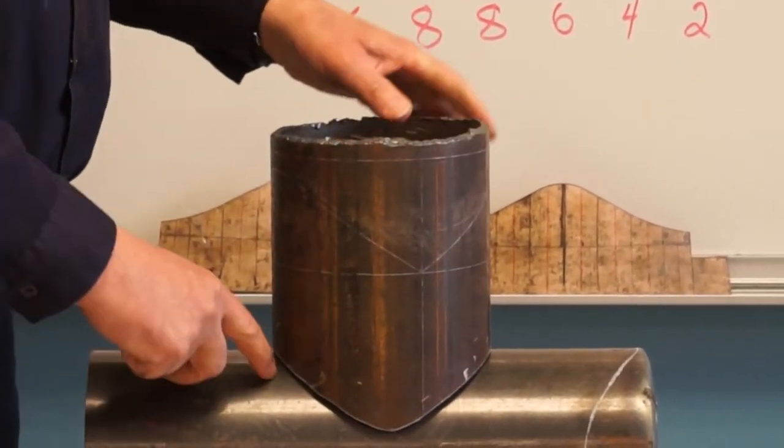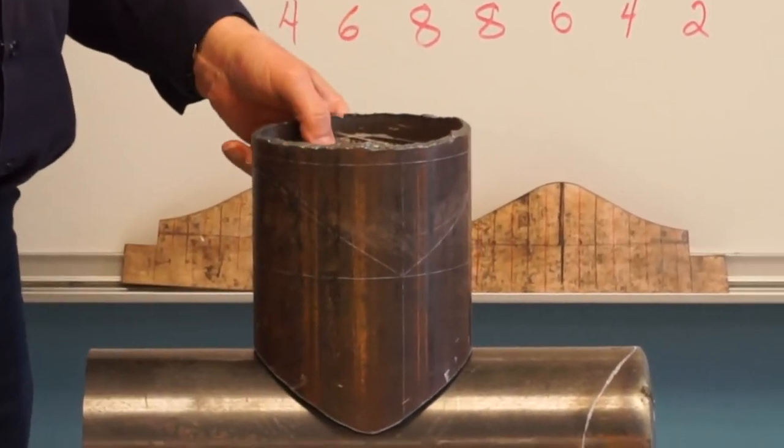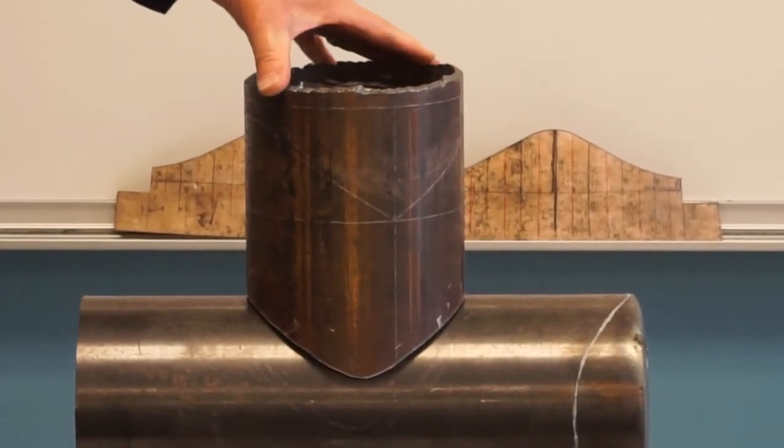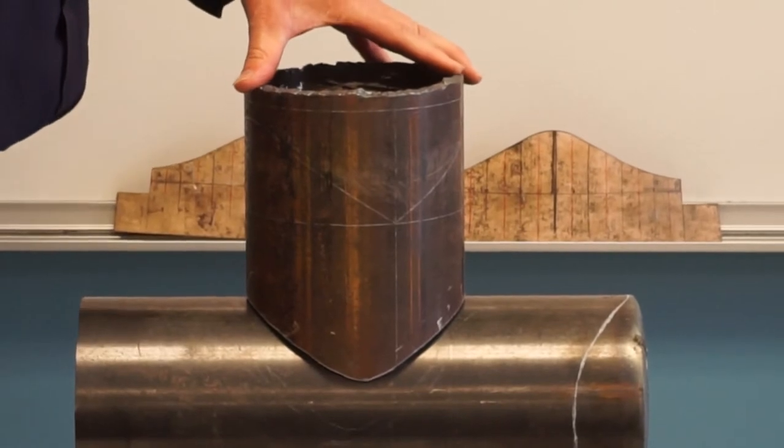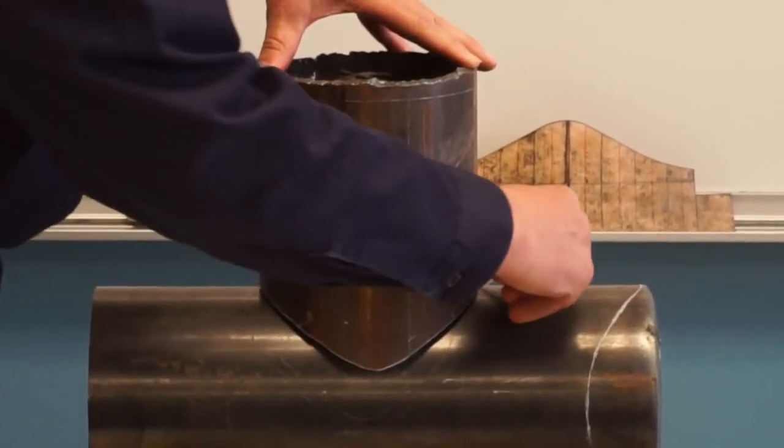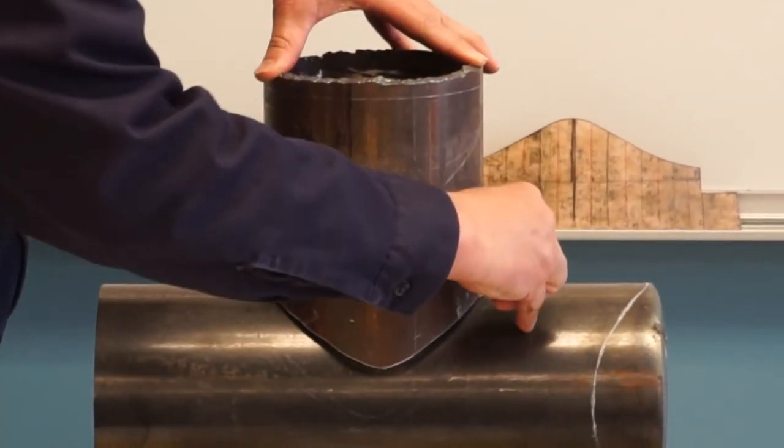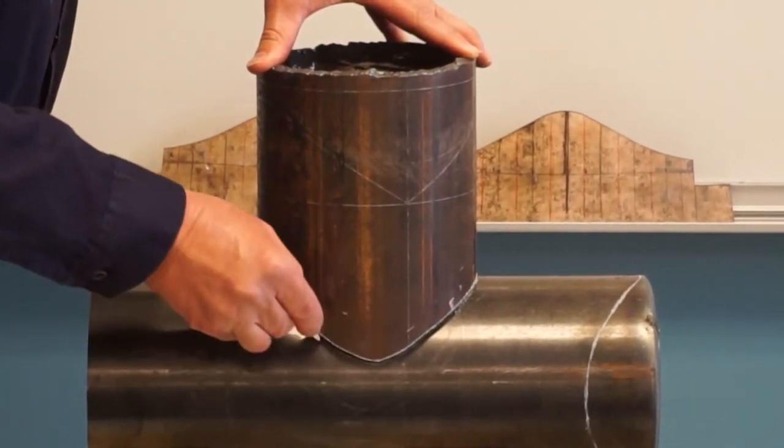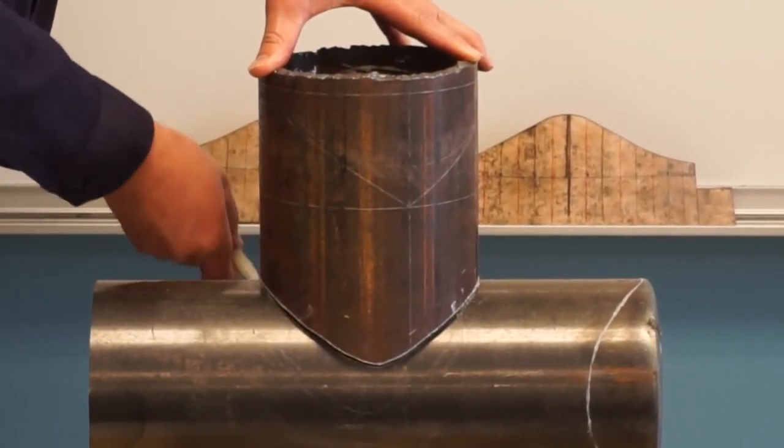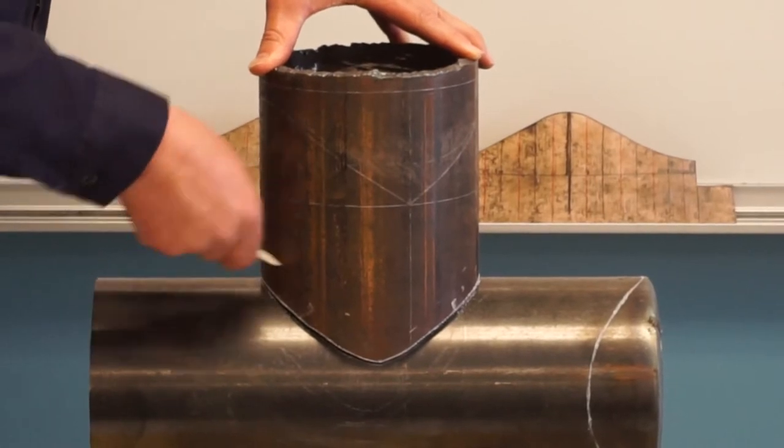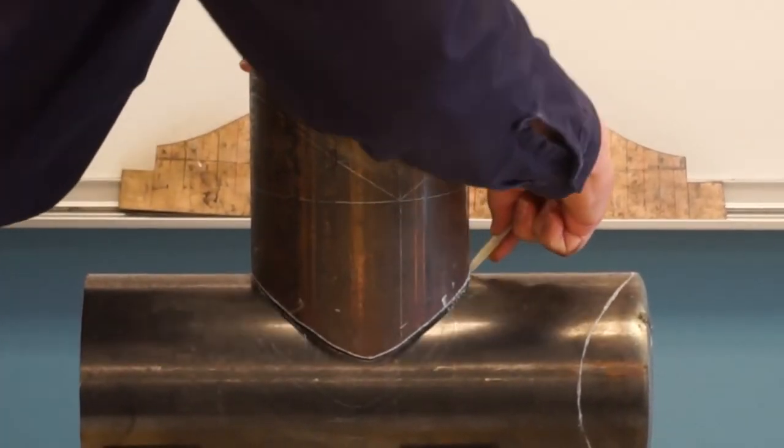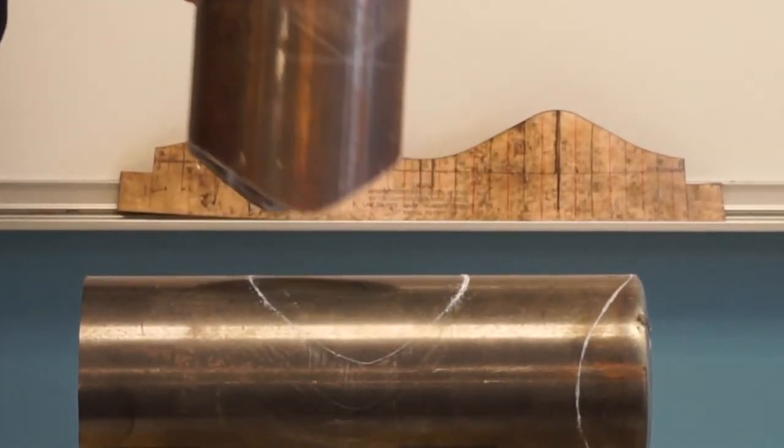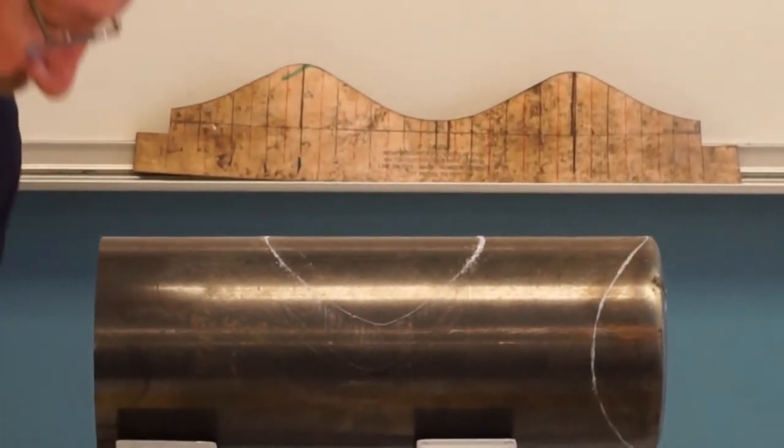Then you're going to turn it around. You're going to set it wherever your hole is going to be for your branch. So you're going to cut the hole for the saddle. You're going to set it where it goes. Take your soapstone and try to draw as close to the pipe as you can all the way around. You're going to do this all the way around. So now you set that aside.